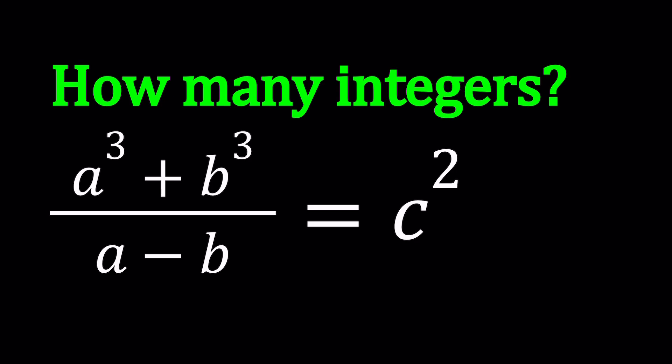But guess what? We're not necessarily looking for solutions, but we're looking for the number of integer solutions. Since it's a Diophantine equation, the solutions are supposed to be integers. Otherwise, you could probably find infinitely many values of a, b, c that satisfy this equation. All right, so let's go ahead and take a look.